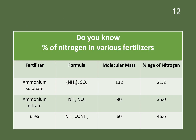Percentage of nitrogen in various fertilizers: Ammonium sulfate, formula NH4(SO4)2, molecular mass 132, percentage of nitrogen 21.2%. Ammonium nitrate, formula NH4NO3, molecular mass 80, percentage of nitrogen 35%. Urea, formula NH2COONH2, molecular mass 60, percentage of nitrogen 46.6%.